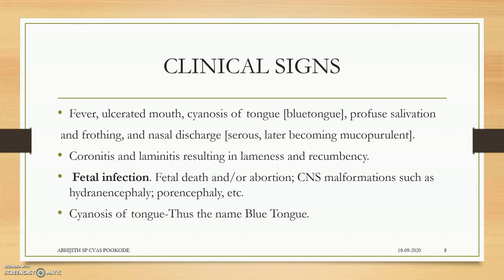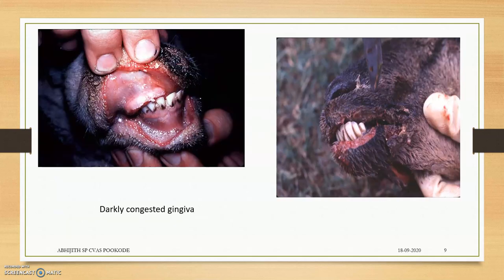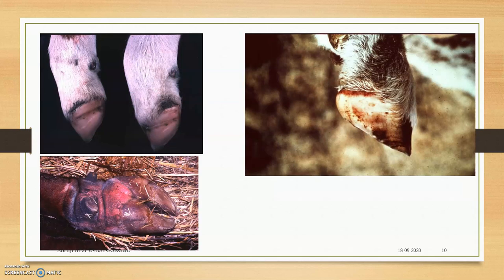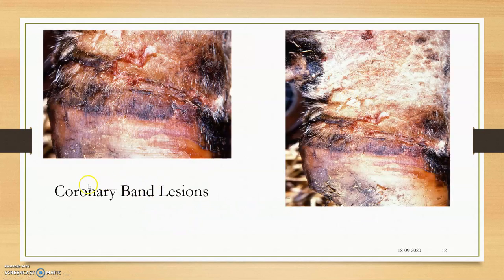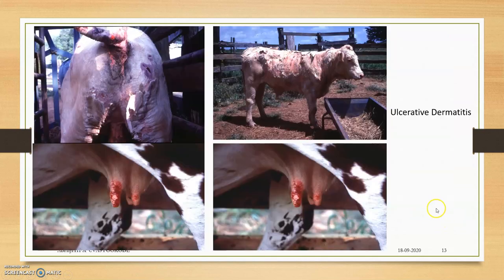CNS manifestations are present, with many malformations including hydranencephaly and porencephaly. Lesions include darkly congested gingiva, coronitis, hyperemia of the corona, coronary region hyperemia, petechiae, foot coronitis, ulceration and necrosis of the skin, coronary band lesions, and ulcerative dermatitis — which is a very important problem.